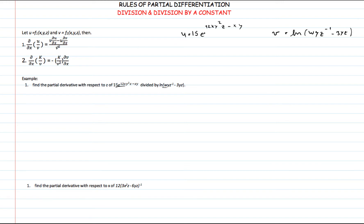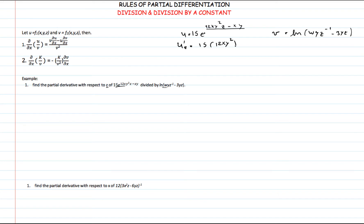Now that we know the rule, we have to find the partial derivative with respect to the variable we want of the numerator and also of the denominator. Our partial derivative should be with respect to z. So we find the partial derivative of u with respect to z. The result is 15 times the partial derivative of the power — since z appears in the exponent and its derivative with respect to z is 1 — giving us 12xy². All of this is multiplied by e raised to 12xy²z minus xy. This is the partial derivative of u with respect to z.